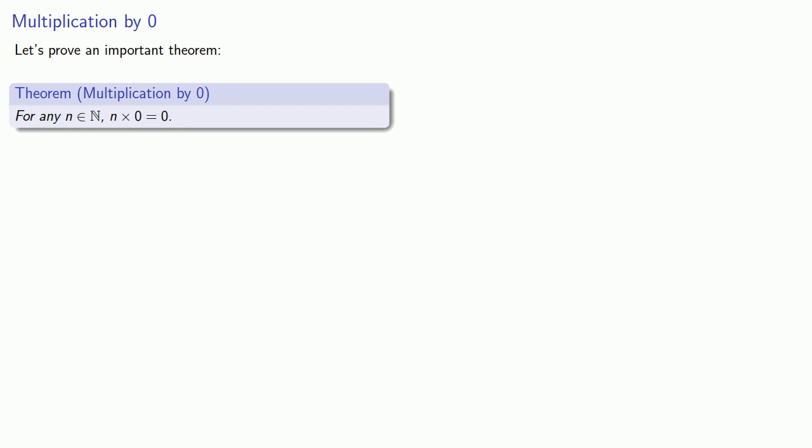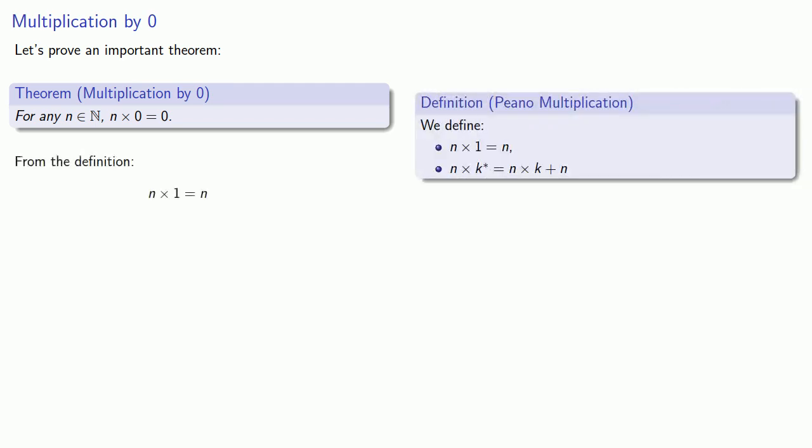So we're going to need the definition. And from our definition, we know that n times 1 is equal to n. Now we'd like to say something about 0, and the thing we might remember is that 1 is the successor of 0. So n times 1 is the same thing as n times 0 star.